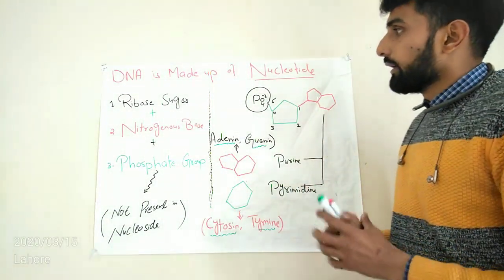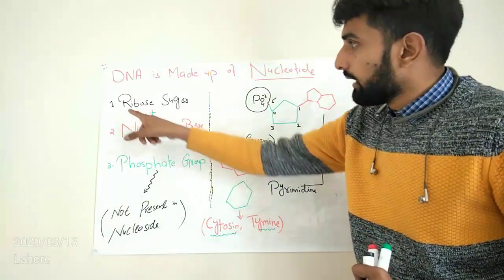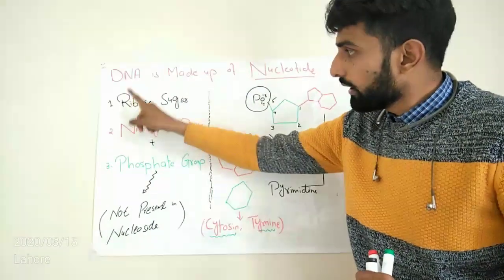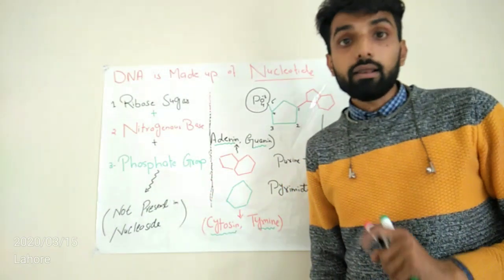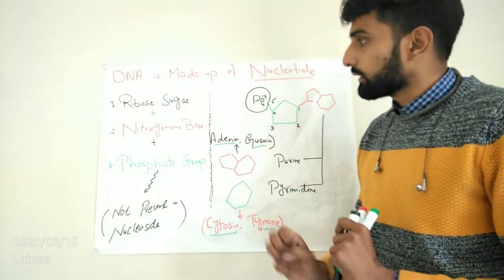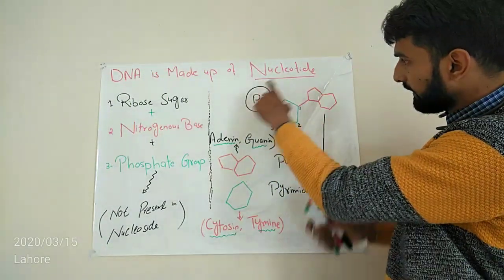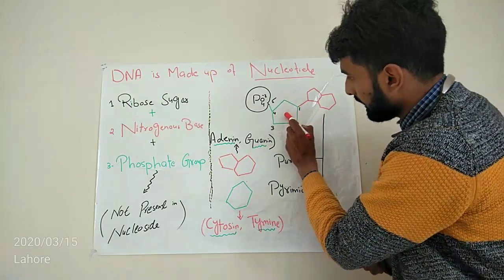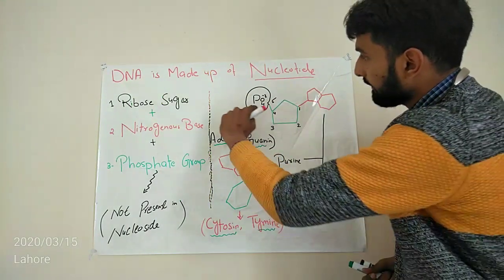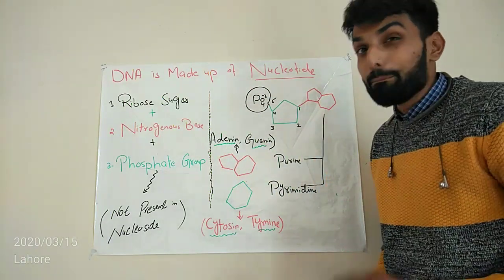Now what is nucleotide? As you see, nucleotide is basically made up of three units. It is made up of ribose sugar plus nitrogenous bases and plus phosphate group. So here you can see a structure of one nucleotide. Here you can see this is ribose sugar and here you can see a phosphate group and here you can see the nitrogenous base.